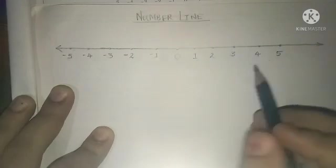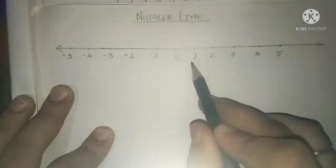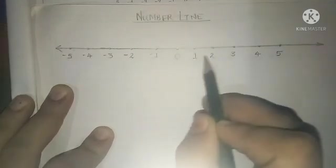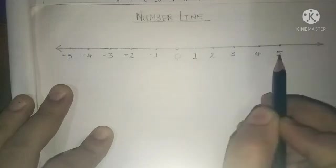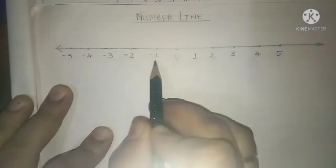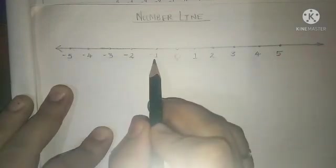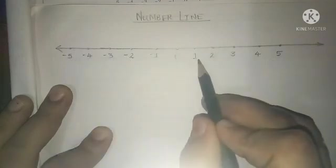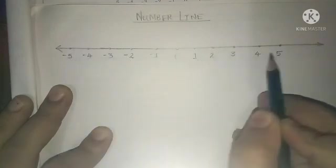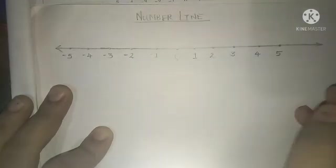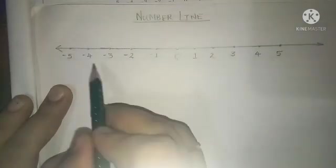The digits 1, 2, 3, 4, 5 on the right side are also known as positive numbers because there is no minus sign before them. On the other side, that is on the left side, the number line consists of negative numbers. It exceeds further ahead on both sides.